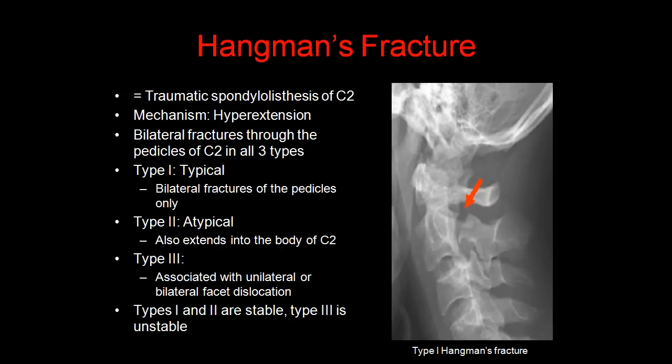A Hangman's fracture is otherwise known as traumatic spondylolisthesis of C2. The mechanism is hyperextension, with bilateral fractures through the pedicles of C2 in all three types. Type 1 involves bilateral fractures of the pedicles only. Type 2 is atypical — the fracture extends into the body of C2. Type 3 is associated with unilateral or bilateral facet dislocation. Types 1 and 2 tend to be stable, and type 3 is unstable. If any of these fractures are suspected on a plain radiograph, a CT scan is advised.